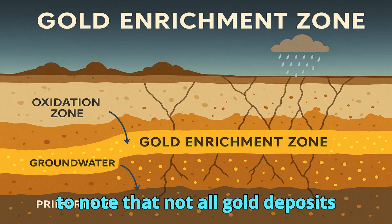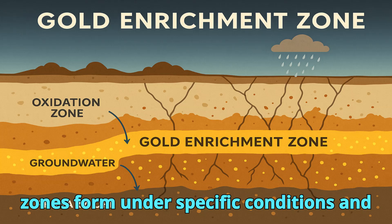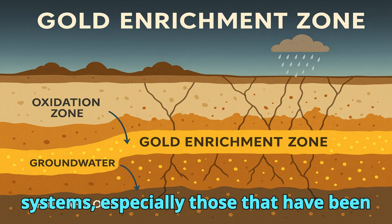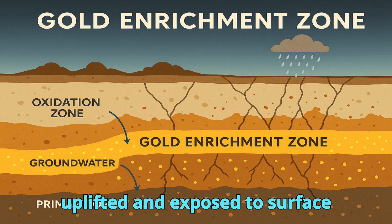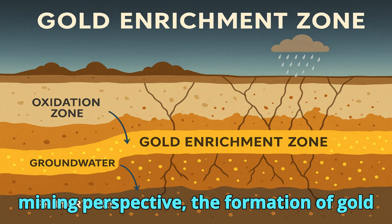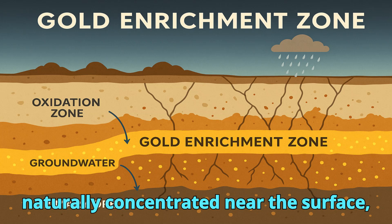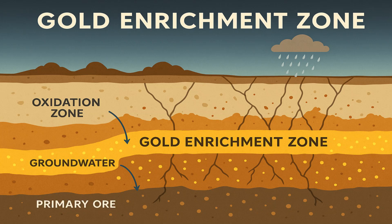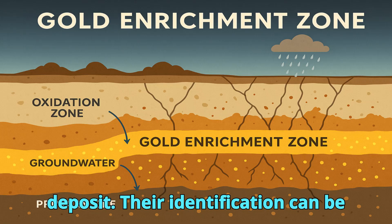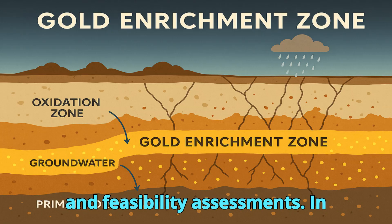It is important to note that not all gold deposits develop enrichment zones. These zones form under specific conditions and are typically found in epithermal, porphyry, and greenstone-belt-type gold systems, especially those that have been uplifted and exposed to surface weathering. From a geological and mining perspective, the formation of gold enrichment zones offers significant advantages, as the gold has been naturally concentrated near the surface, making these zones often the most economically attractive part of a deposit. Their identification can be a key driver in early-stage exploration and feasibility assessments.